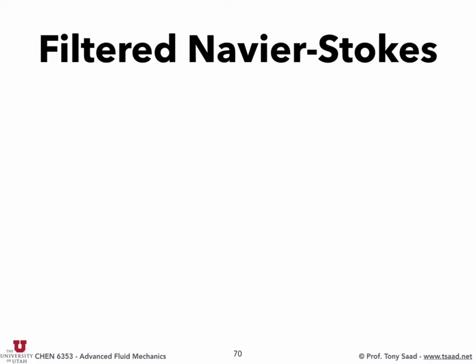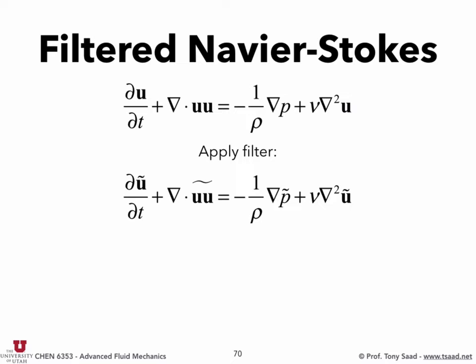Now the filtered Navier-Stokes equations. I'm presenting these so that you understand what you see when you hear words like 'subgrid model' or 'on average' — what these quantities mean. We apply the filter on the transient term, inertial term, pressure, and diffusion. All of these terms are linear. Most of the challenge in turbulence comes from the nonlinear convective term.